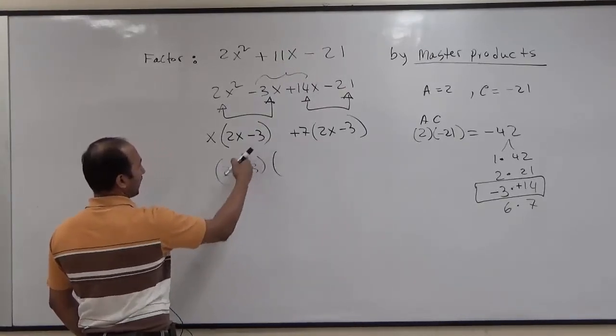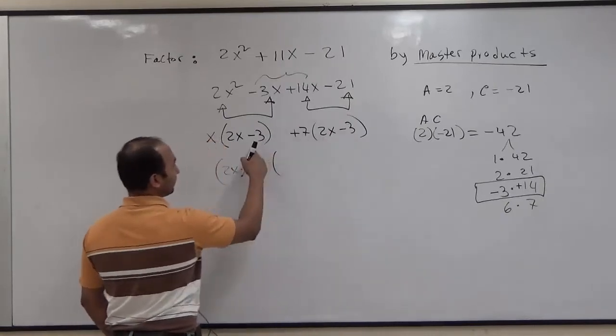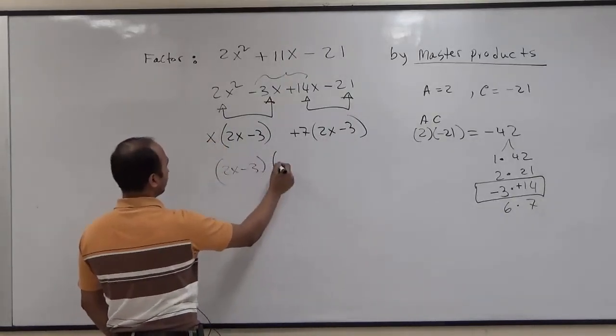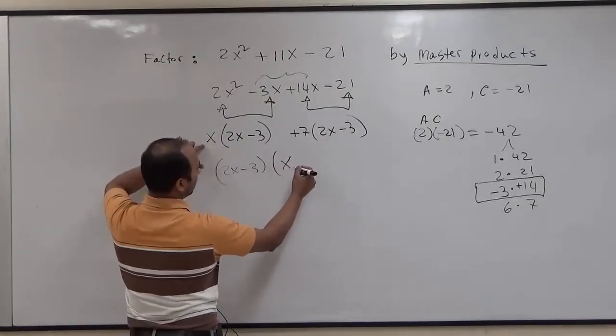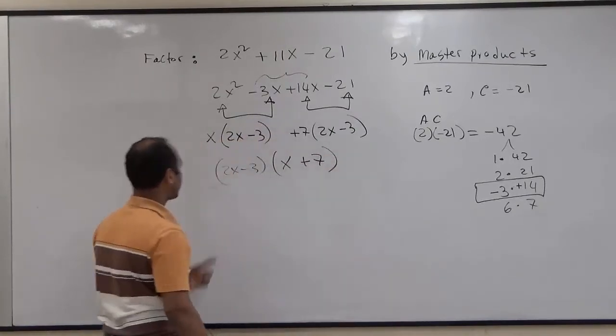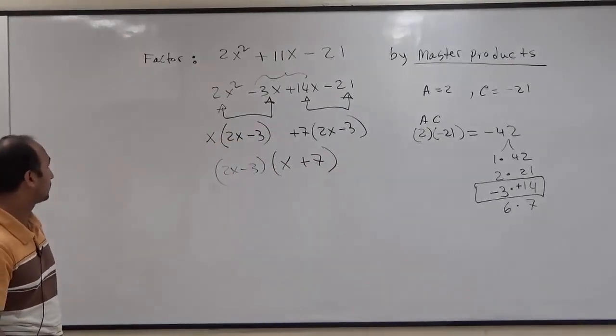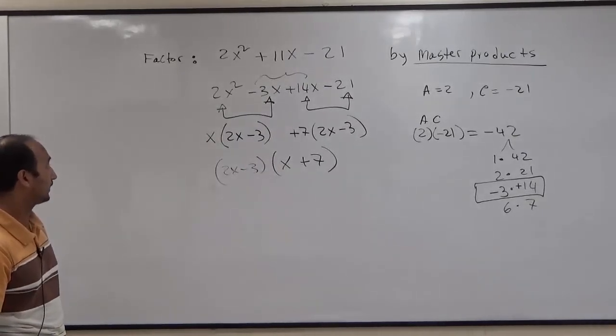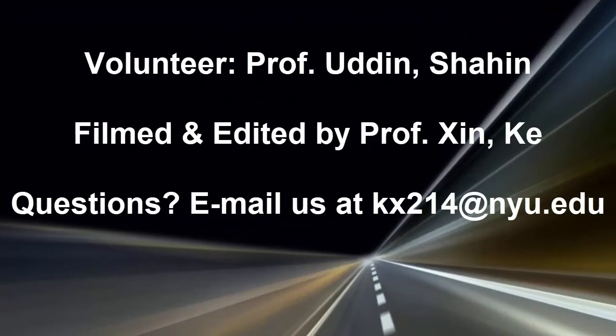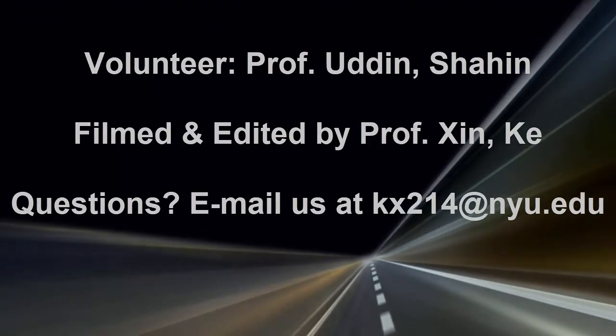Then if I take 2x minus 3 as GCF from both of the terms, we'll have left x plus 7. And that's your factor for 2x squared plus 11x minus 21.